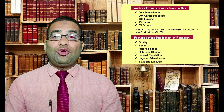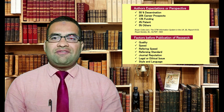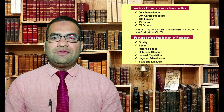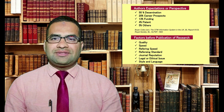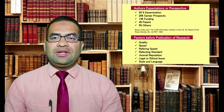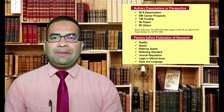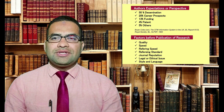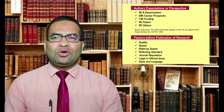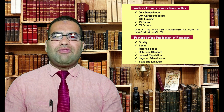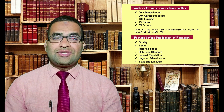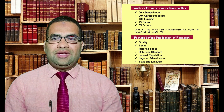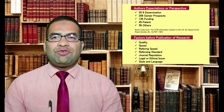According to Brian Coles, an author's perspective to get their research published is due to the following results: 50% of authors' work gets disseminated, whereas 20% will help them in career prospects, and 13% of authors' work will help them get funding from interested agencies. 4% of authors look for patent protection.